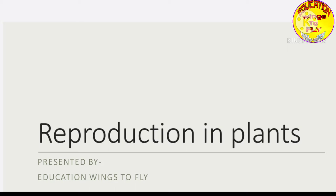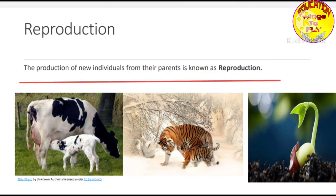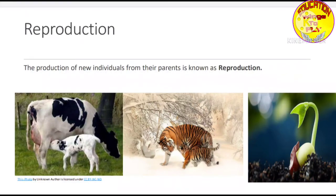Now this reproduction is done by parents. When parents reproduce, they give birth to an individual that is exactly like themselves. So the entire process is known as reproduction. The definition is: the production of new individuals from their parents is known as reproduction. As you can see in the pictures, the parent and its offspring look the same.